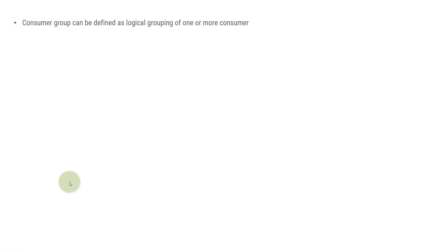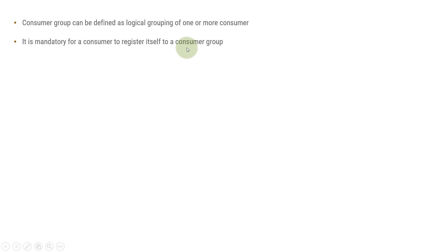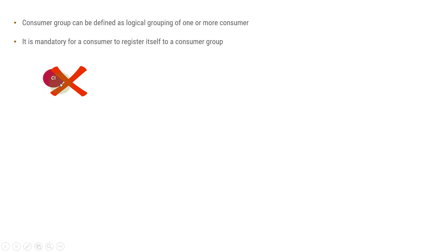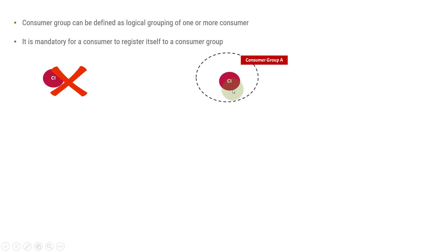A consumer group can be defined as a logical grouping of one or more consumers. It is mandatory for a consumer to register itself to a consumer group. If no consumer group is provided, then internally Kafka will create a random consumer group. A consumer instance like C1 cannot exist independently — it always needs a consumer group to exist in the Kafka environment. If C1 is assigned to consumer group A, it can consume messages from a Kafka topic partition.